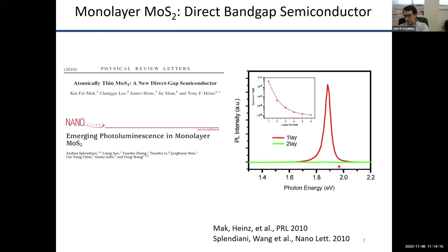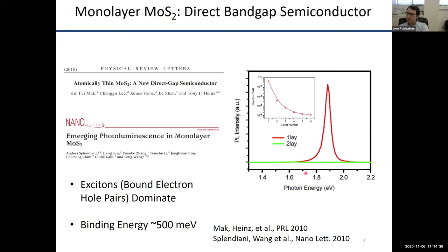This got a lot of optics people excited — myself included — many of whom were previously studying systems like indium arsenide quantum dots or gallium arsenide quantum wells. We now have this 2D material with a bright excitonic photoluminescence line. It was discovered shortly thereafter that the optical properties of these 2D semiconductors are dominated not just by interband transitions, but by excitons. This is a consequence of a very low in-plane dielectric constant resulting in very high binding energy.